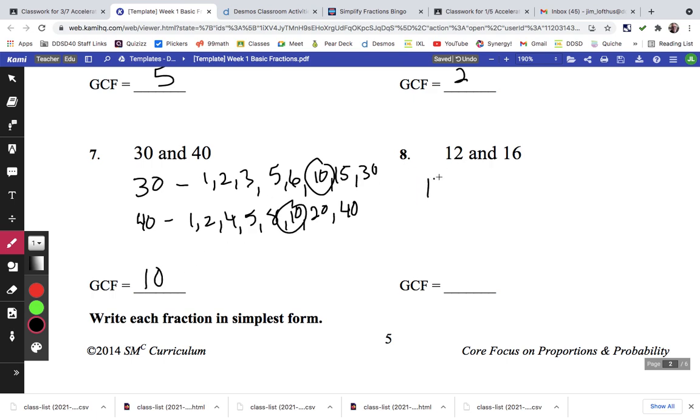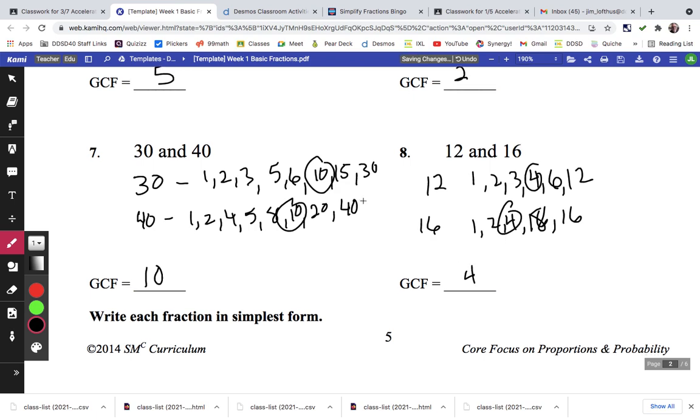12 and 16. Factors of 12 are 1, 2, 3, 4, 6, and 12. The factors of 16 are 1, 2, 4, 8, and 16. The biggest number that's in both lists looks like a 4. The greatest common factor of 12 and 16 is 4.